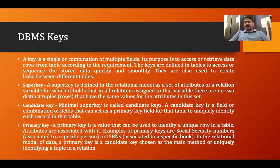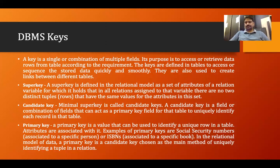Any one of the candidate keys can become the primary key. Now, super key is a set of attributes in a relational model which has the primary key property. Any combination including a primary key attribute can become a super key. For example, in the student table, roll number + name or roll number + phone number can each become a super key.